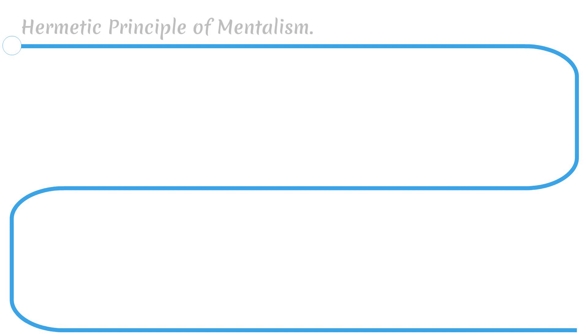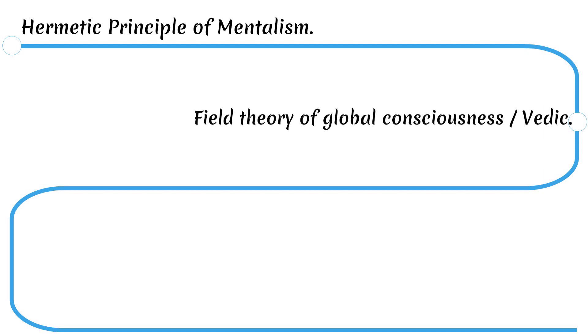The second aspect is that consciousness is a fundamental and ubiquitous feature of reality. The Kybalion categorized the whole hermetic philosophy into the seven hermetic principles, as the concept of mentalism refers to 'the all is mind, the universe is mental.' Other theories with similar aspects and conclusions are the Vedic field theory of global consciousness.